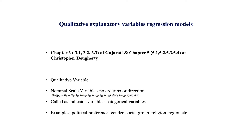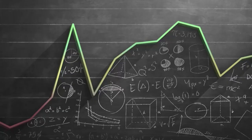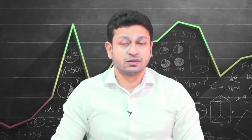For example, if you consider male and female — there are just two categories, you cannot really assign a numeric value. Similarly, political preferences like being left, rightist, or centrist — you cannot order them, they are just different categories. Or social groups in India such as General, Scheduled Caste, Scheduled Tribe, or OBC — you cannot assign a specific value to each of these categories.